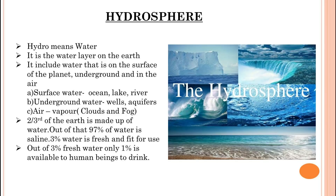Two-thirds of the earth is made up of water. Out of that, 97 percent of water is saline and only 3 percent of water is fresh and fit for use. Out of that 3 percent fresh water, only 1 percent is available to human beings to drink.